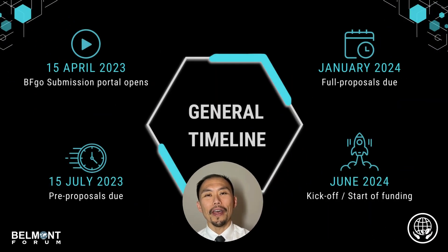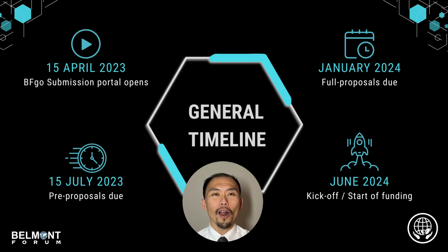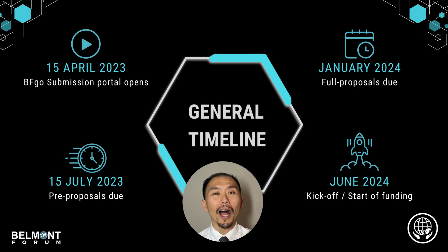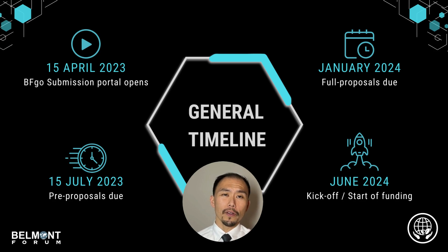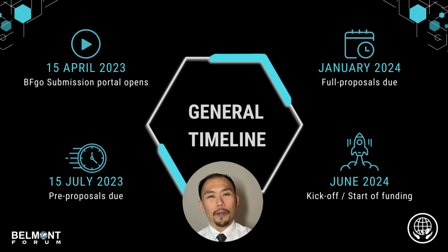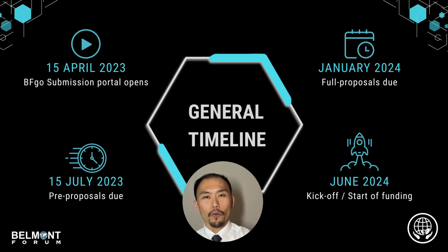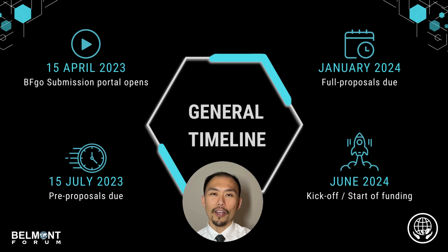In this CRA, we have four key dates to remember. The first is the 15th of April, when the BFGO, our online portal for submissions, opens. Next is the 15th of July, when pre-proposals will close, and a panel of experts will review these proposals. Those with a concrete idea will be invited to move on to the full submission, which will be due sometime in January 2024. The final kickoff for the projects will be June 2024 at SRI, the Sustainability Research Innovation Congress.